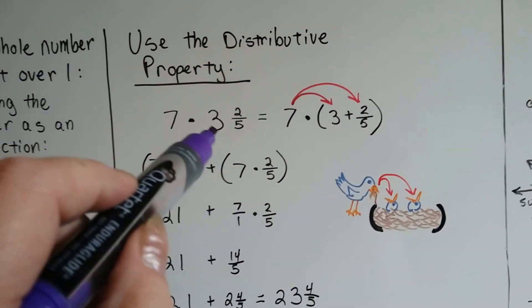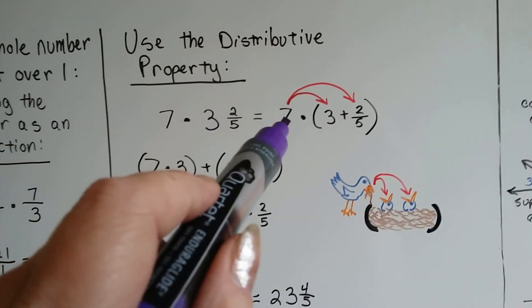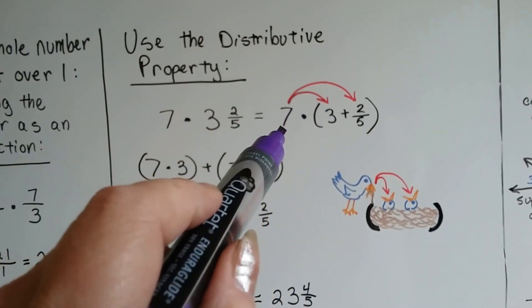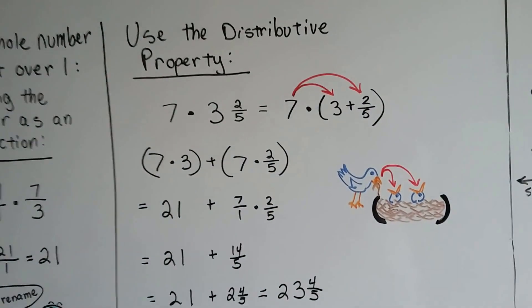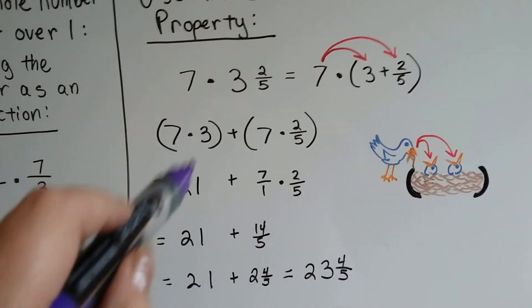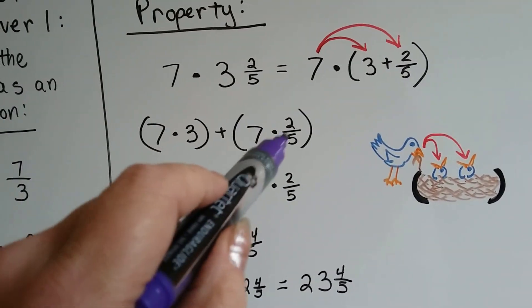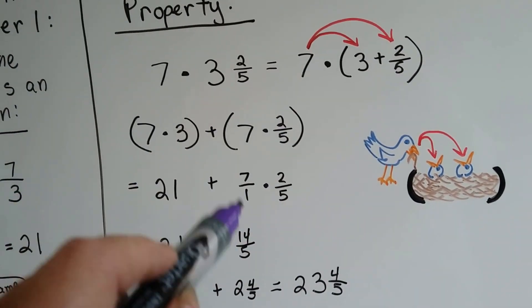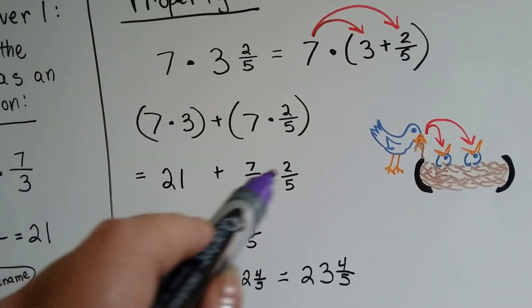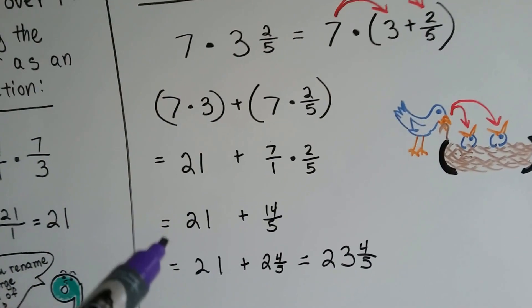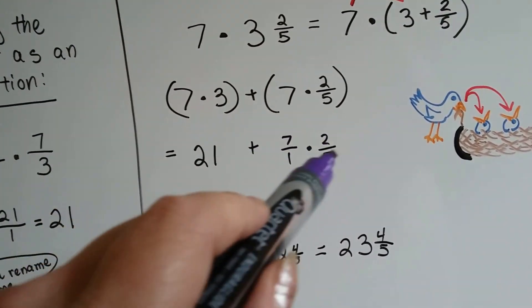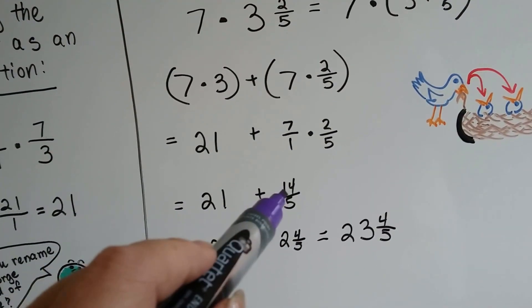So if we have 7 times 3 and 2 fifths, we can do 7 times 3 and then 7 times 2 fifths and add them together. 7 times 3 is 21. 7 times 2 fifths, we need to put the 7 over a 1 so we can turn it into a fraction and multiply it. It becomes 14 fifths. 21 plus 14 fifths.